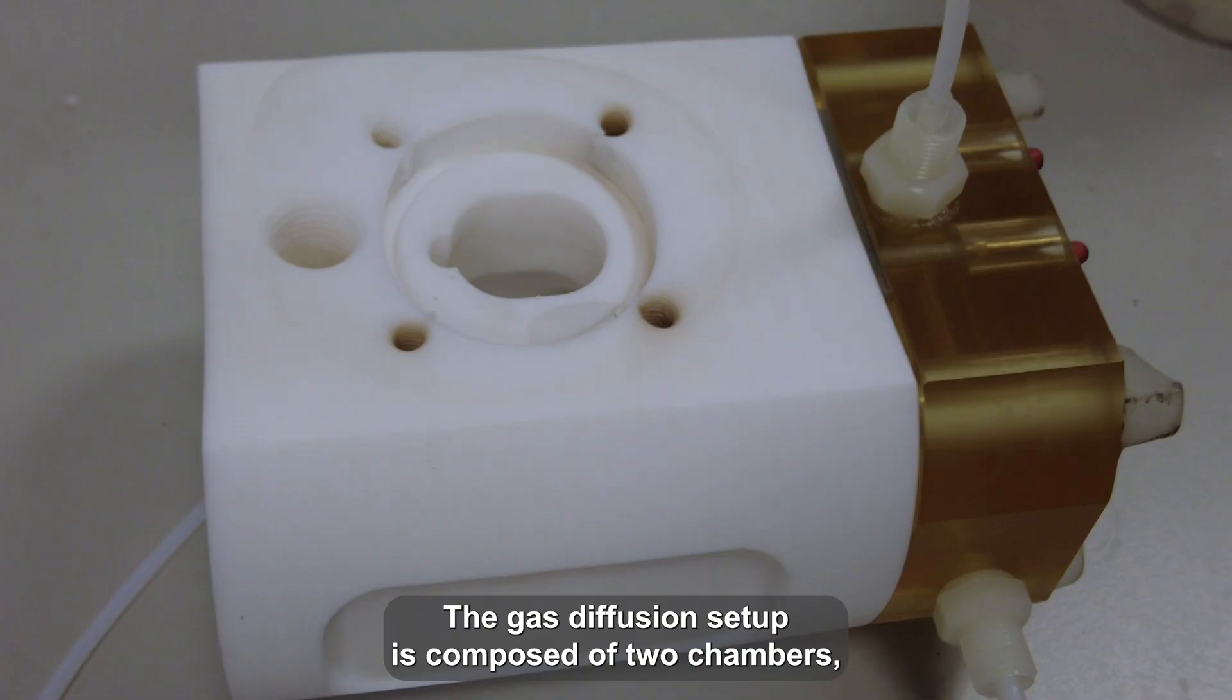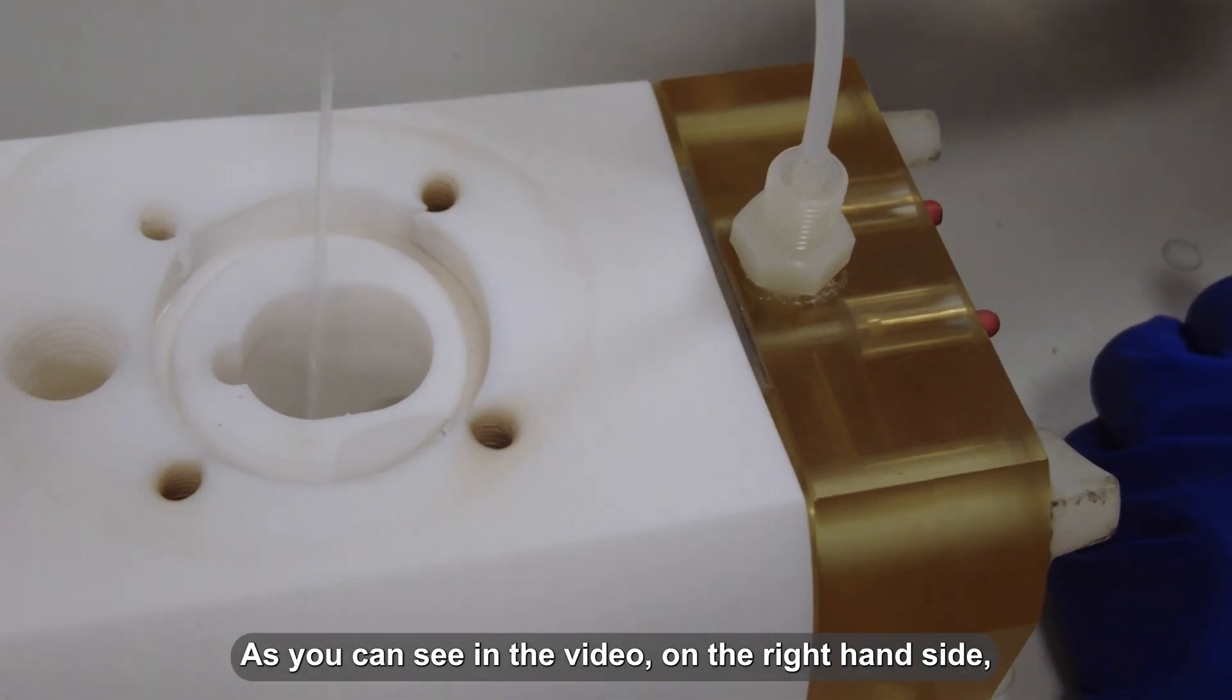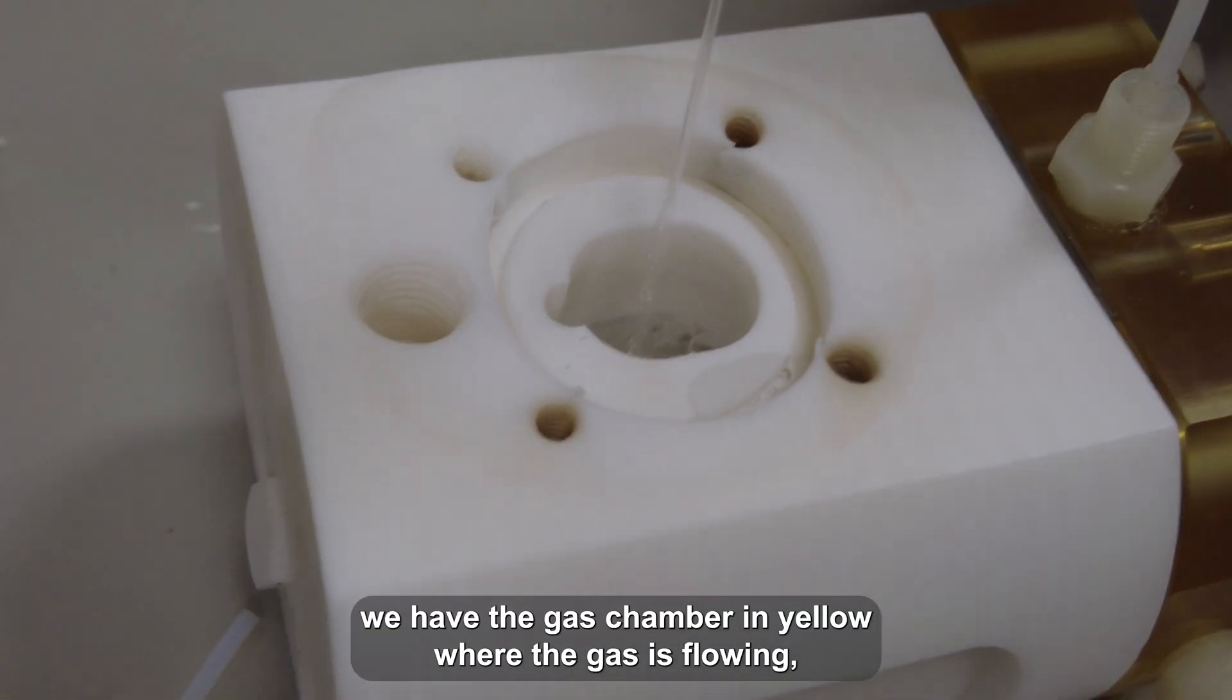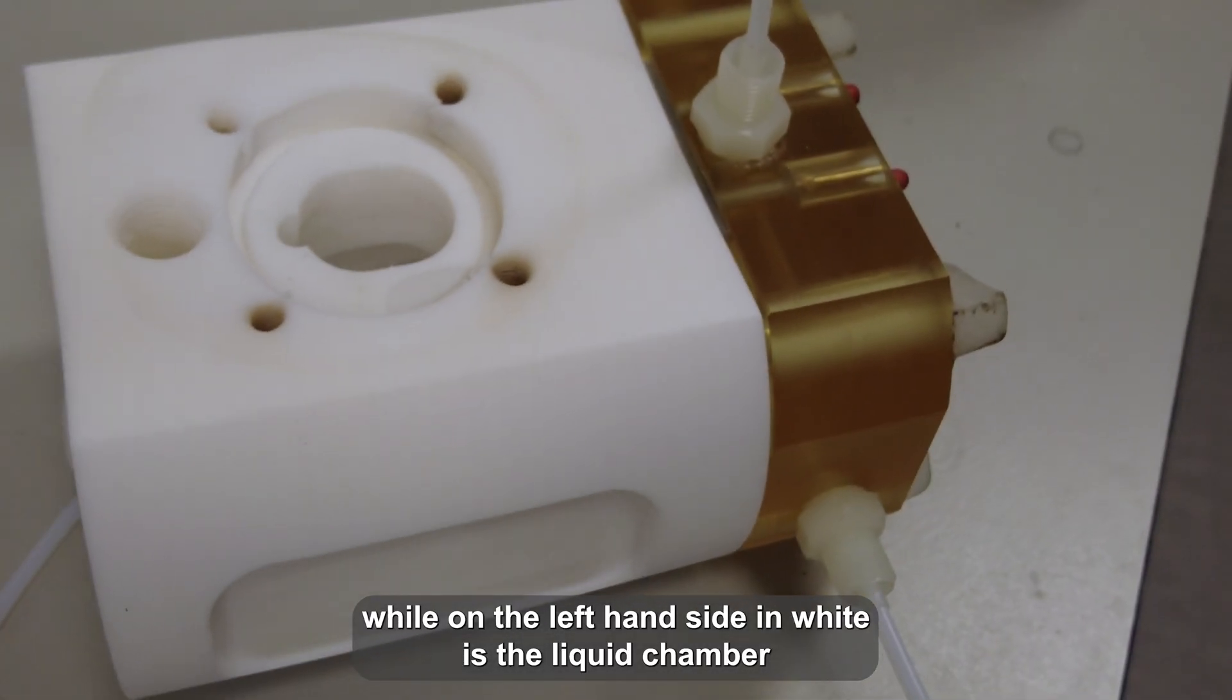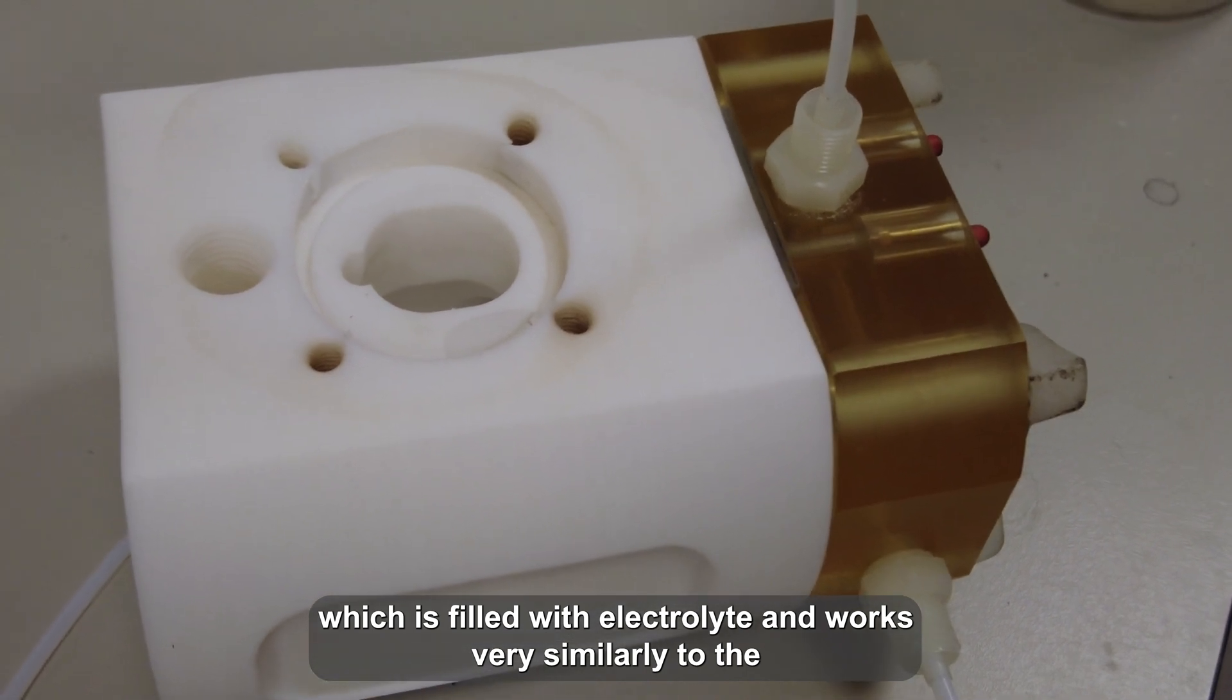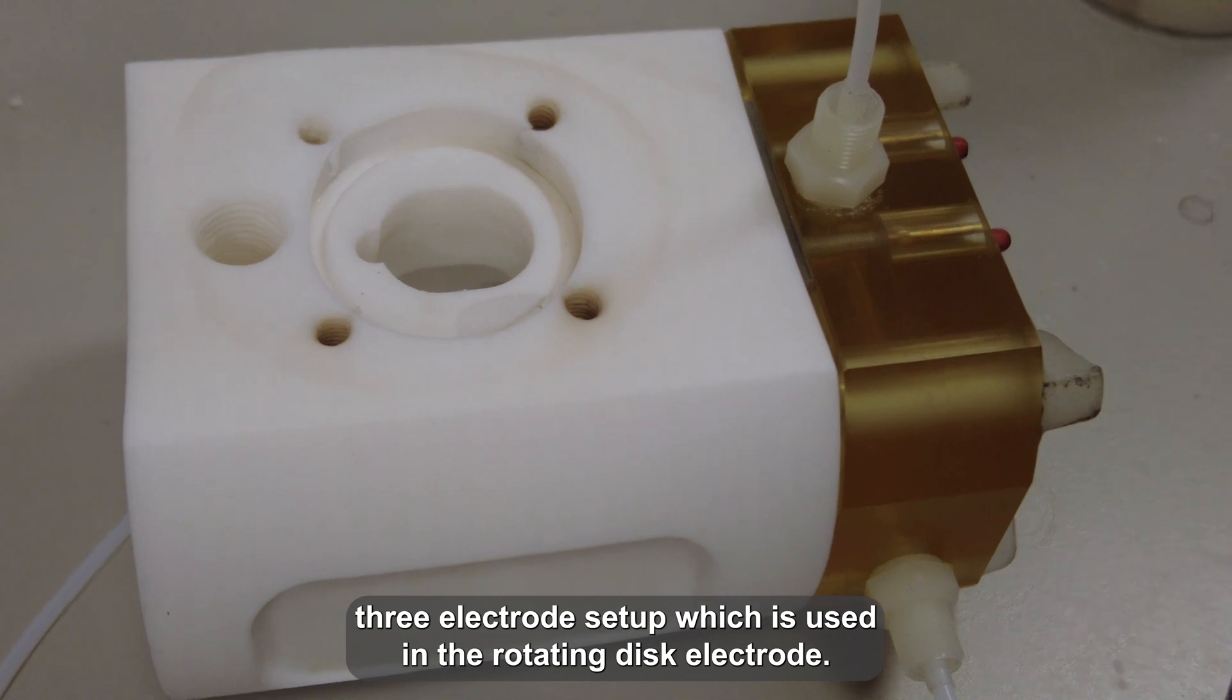The gas diffusion setup is composed of two chambers separated by the working electrode, which is the catalyst-coated carbon paper. As you can see in the video, on the right-hand side, we have the gas chamber in yellow where the gas is blown, while on the left-hand side in white is the liquid chamber, which is filled with electrolyte and works similarly to the three-electrode setup used in the rotating disk electrode.